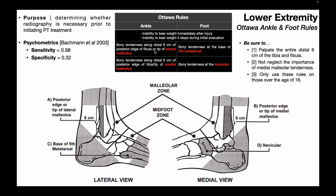Now for the foot-specific rules. The first is bony tenderness at the base of the fifth metatarsal — that's on the lateral side. We palpate the base of the fifth metatarsal, and if there's bony tenderness, that constitutes a need for radiography. Finally, bony tenderness at the navicular — that's medial. The easiest way to find it is to locate the navicular tuberosity and palpate that. If there's bony tenderness there, that also requires radiography.